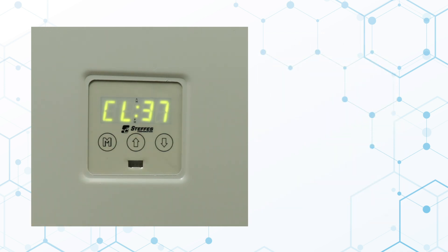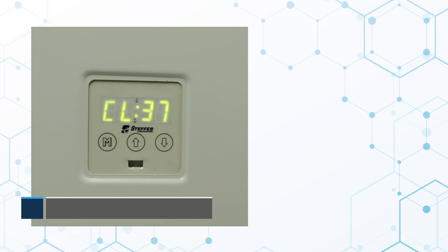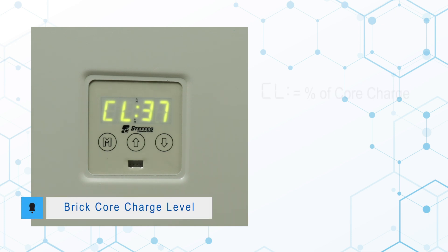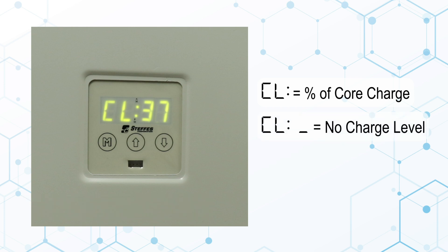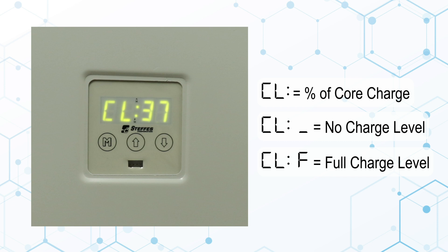Press the up arrow again. The display will show CL and a number, indicating the current percentage of heat stored in the brick core. CL underscore represents a charge level lower than the minimum core temperature, and CLF represents a full core charge level.